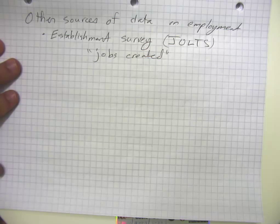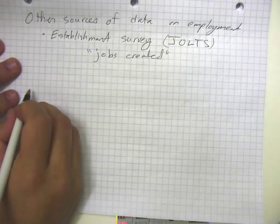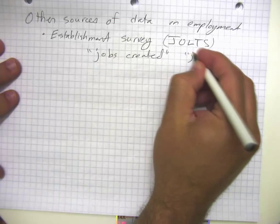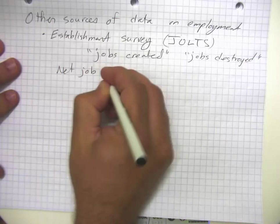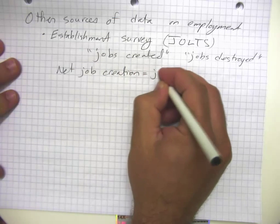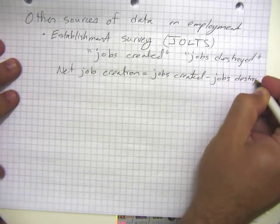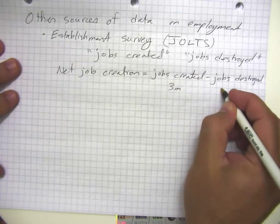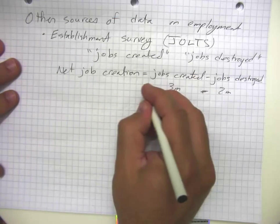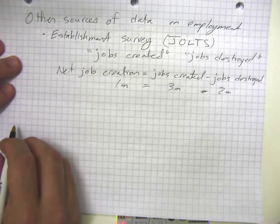Notice you wouldn't be able to get that data directly from unemployment statistics, because someone going from one job to two jobs changes the number of jobs in the economy even though it doesn't change their employment status. Net job creation is jobs created minus jobs destroyed. The economy actually goes through a surprising amount of churn in a given year — it might be something like three million jobs created and two million destroyed, so on net one million jobs were created. There is just a tremendous amount of churning that goes on.